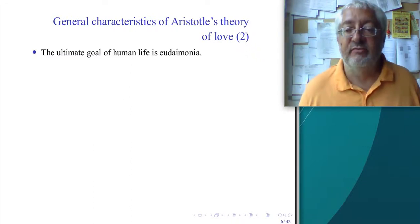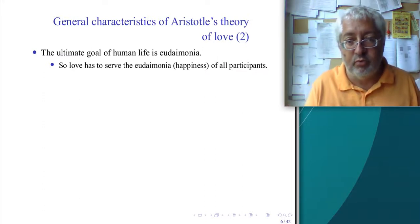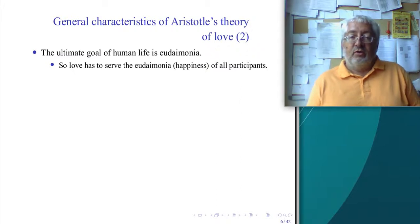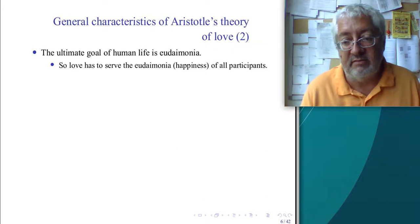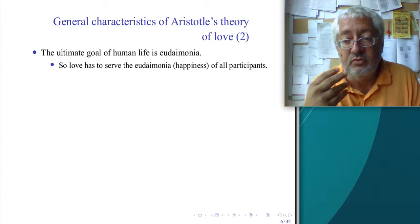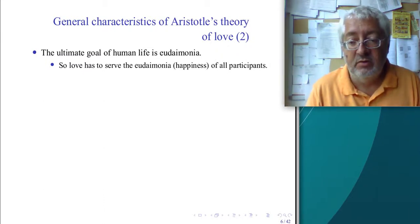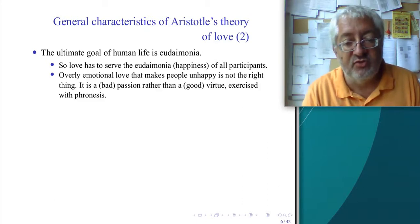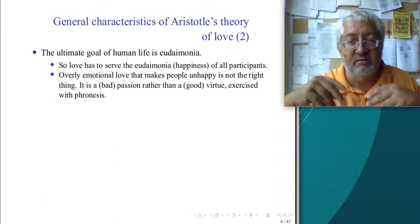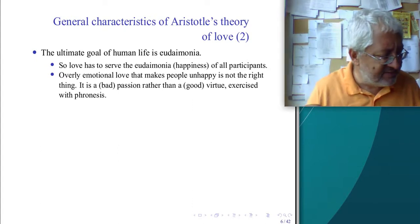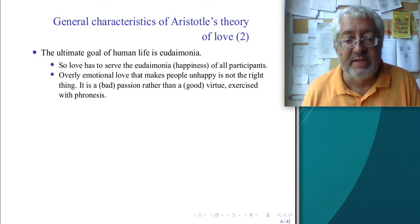The ultimate goal of human life is eudaimonia, so love has to serve eudaimonia — the happiness of all participants. If your love is not serving your eudaimonia, you're doing it wrong. Aristotle would say you are in love ultimately because you want to be happy; if love makes you unhappy, there's no point. Love, like wealth, is a thing you want in order to be happy. Overly emotional love that makes people unhappy — like in a movie where people are crazily in love and suffering — is a bad passion for Aristotle rather than a good virtue.